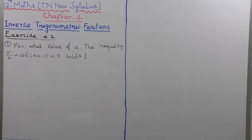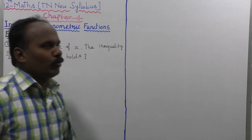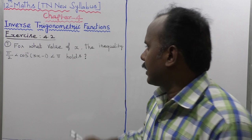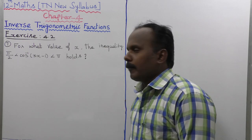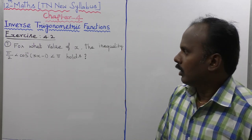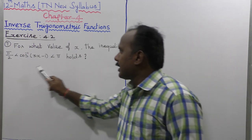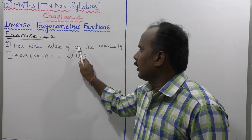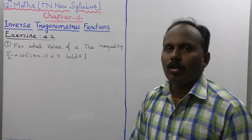For what value of x does the inequality π/2 < cos⁻¹(3x - 1) < π hold? This is the given inequality: π/2 is less than cos inverse of 3x minus 1, which is less than π.